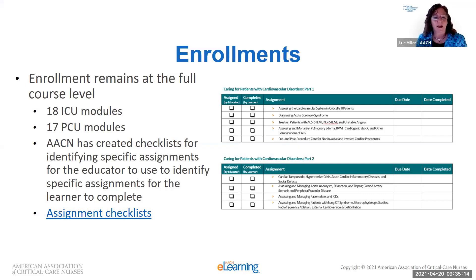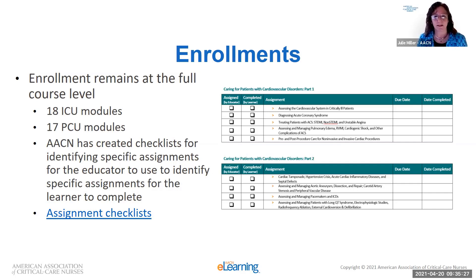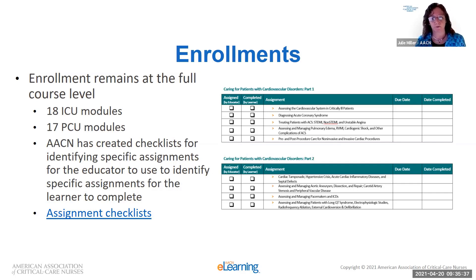One of the things we have in ECHO are the modules — 18 ICU and 17 PCU — and enrollment remains at the full module level. What does that mean? If you're going to give your learners ECHO, they're going to see 18 modules. Assignment level tracking is what happens in the LMS, but you can't just assign one assignment; you have to assign the full module.